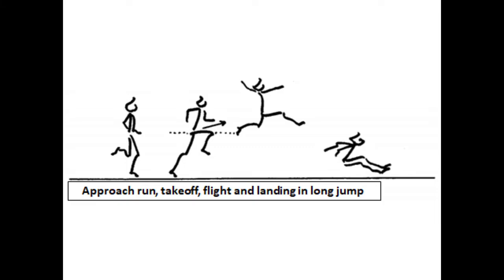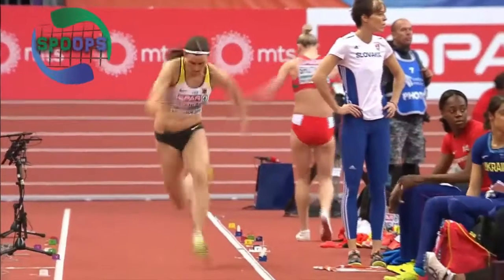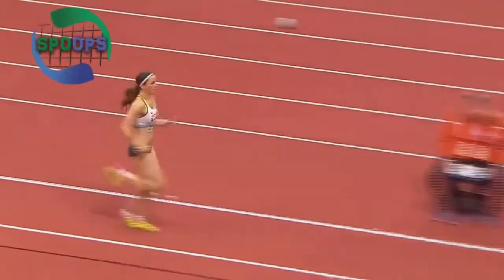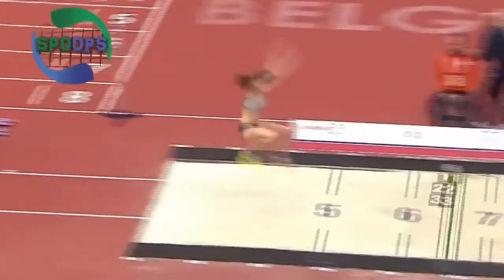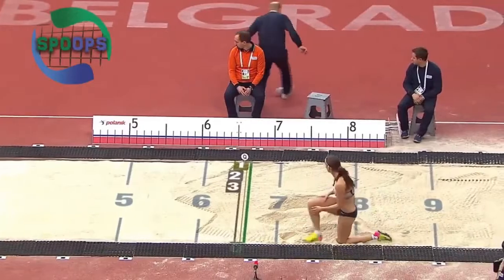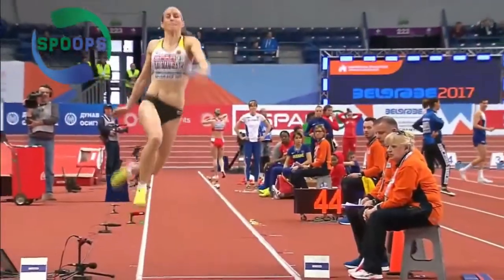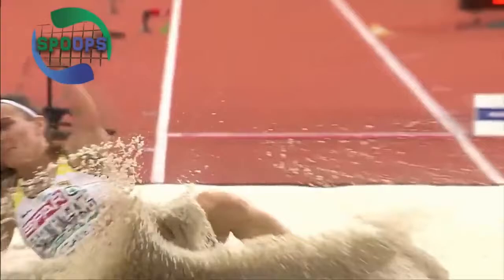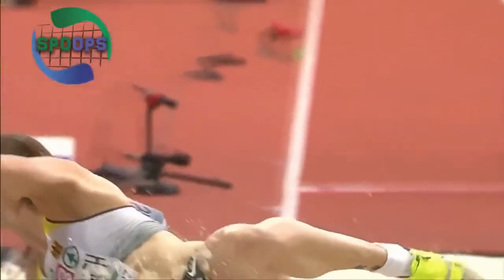The long jump, as in other athletics jumping events, has 4 phases in its execution: the acceleration phase, the takeoff phase, the flight phase and the landing phase. In the first phase, or approach run, the acceleration covers about 16 to 20 meters for beginners — the equivalent of 12 strides — or up to 50 meters for professionals — the equivalent of 20 strides.